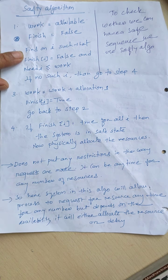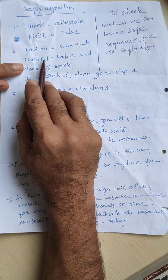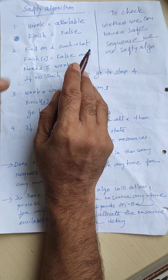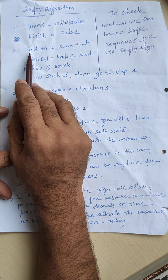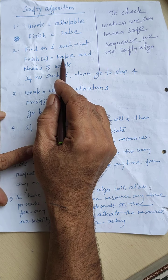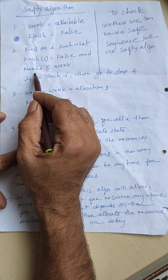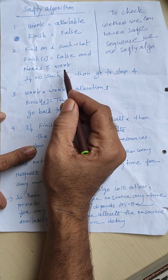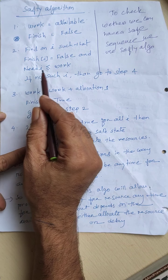For all i — whether there is one process, two processes, or a hundred processes — finish[i] is set to false by default. The algorithm will check for all processes whether finish[i] is equal to false and the need of that process is less than or equal to work. Work represents the available resources, so the need should not be greater than work. This means the process is not finished because it needs some resources, and the required resources are less than or equal to the available resources.